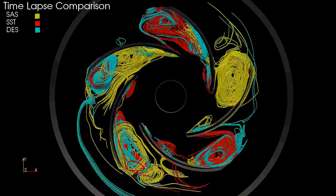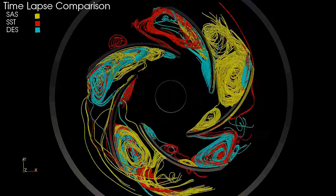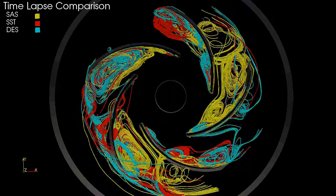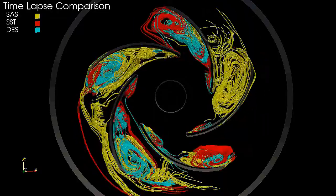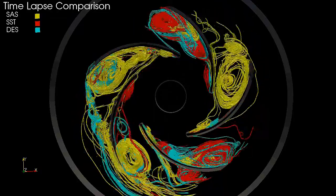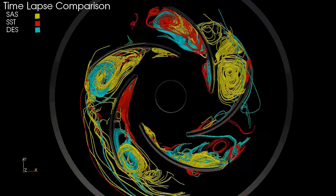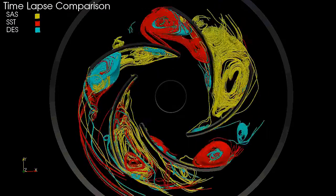The paper describes how we extracted vortices from the datasets. In this video, we show a time-lapse comparison of the vortices extracted from the SAS simulation colored in yellow, the SST simulation colored in red, and the DES simulation colored in greenish-blue.